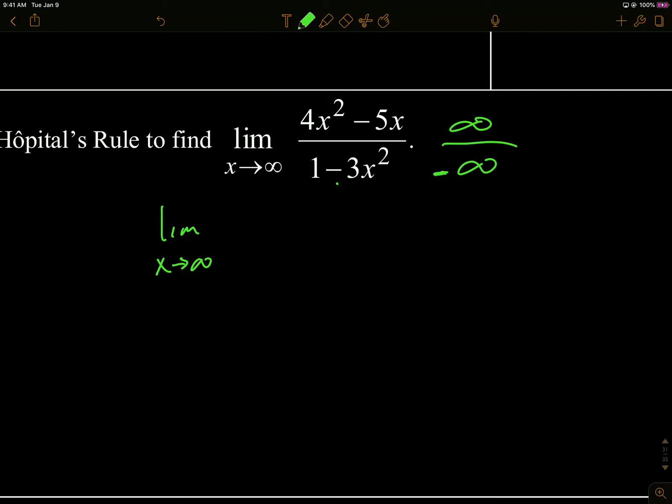So I get the derivative of the top is 8x minus 5, the derivative of the bottom is negative 6x. So now if I plug infinity in again, I get up top I get infinity, on the bottom I get negative infinity. So I'm going to L'Hôpital it again and see what happens. I get 8 on top over negative 6 on the bottom, so I get negative 8/6. I want to reduce that because we know that the real answer that we got earlier the other way is negative 4/3.